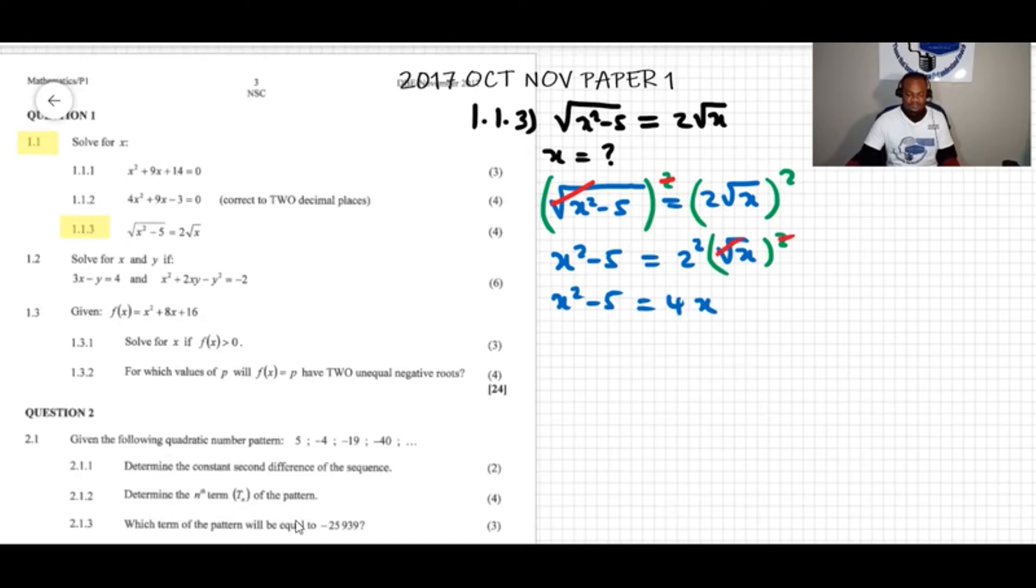Now we can move the 4x over. That makes x squared minus 4x minus 5 equals 0. Now we have a trinomial. We can consider the last term, which is negative 5. I'm going to write here negative 5 and list the factors of negative 5.